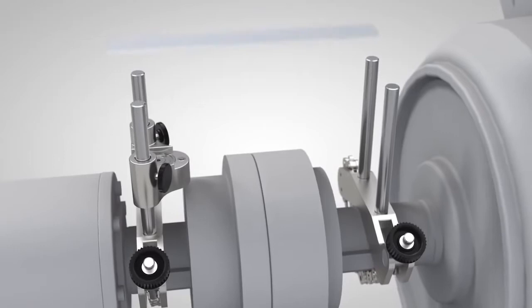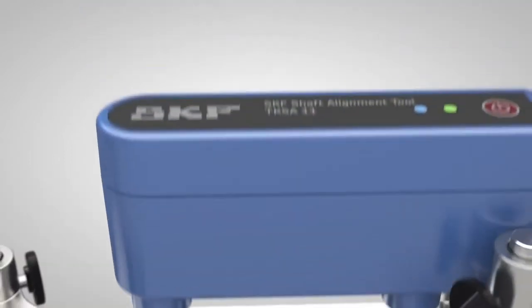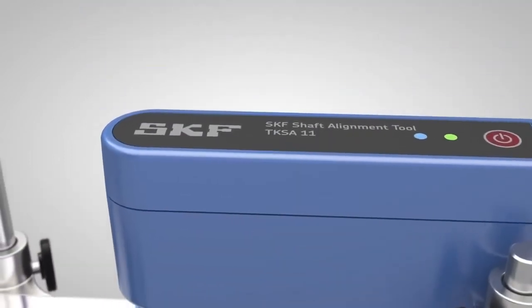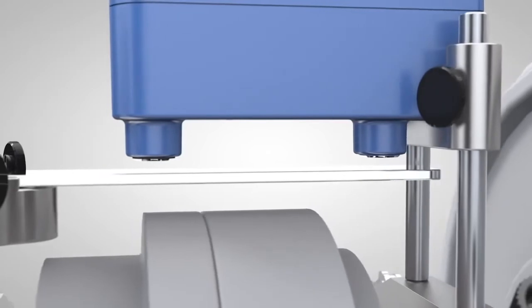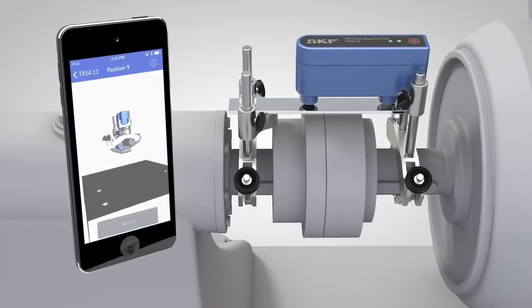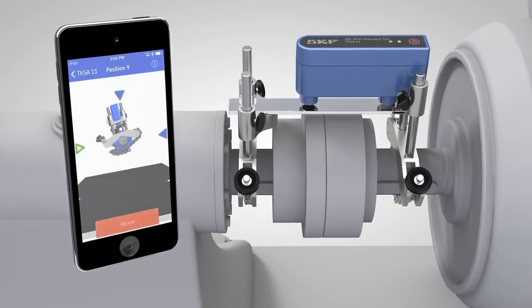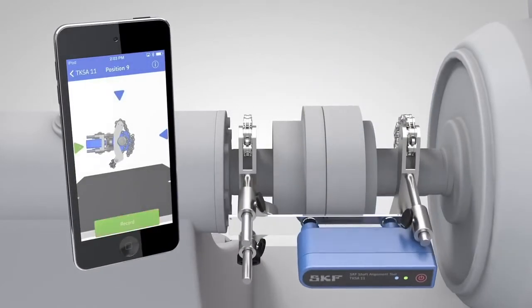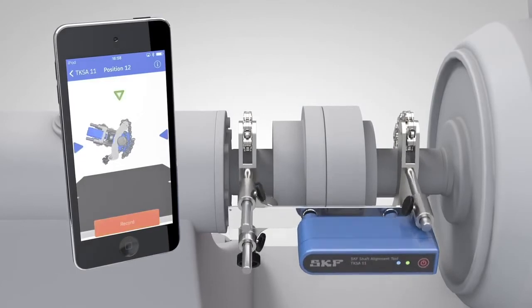SKF is proud to present the SKF Shaft Alignment Tool TKSA 11. By using innovative inductive proximity sensors and an intuitive app for mobile devices, the TKSA 11 is a very easy to use instrument that facilitates accurate shaft alignment.